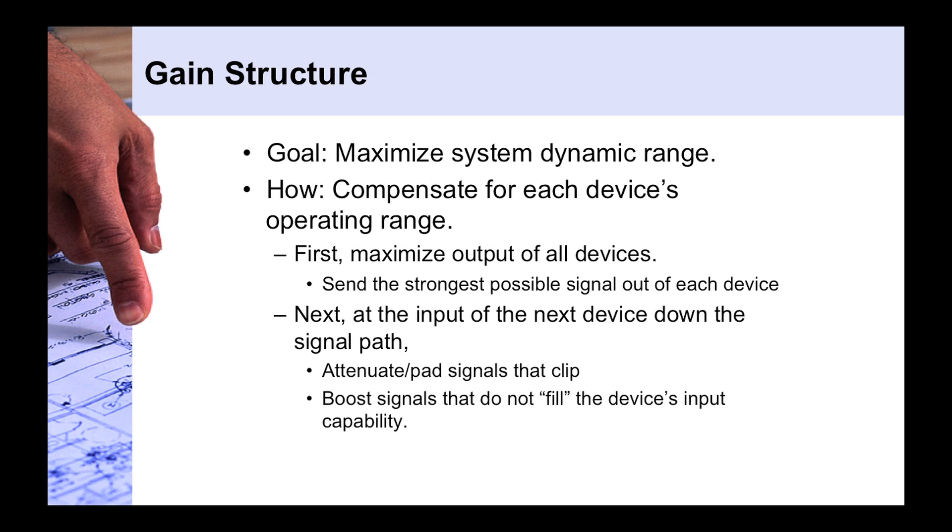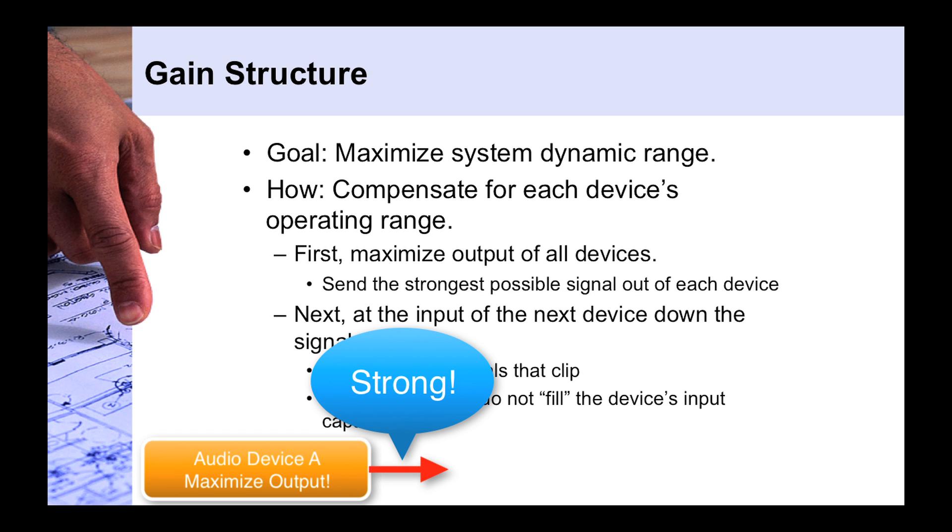The first rule of thumb is to maximize the output of all devices. Because what you want to do is send the strongest possible signal out of a device so that you have the best possible signal-to-noise ratio exiting that device. Now we don't really care what the input capability of the device is next. We just want to maximize that signal output.